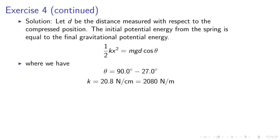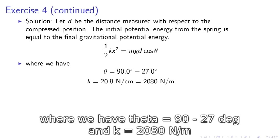Where we have theta equals 90 degrees minus 27 degrees, and the spring constant is 20.8 newton per centimeter.